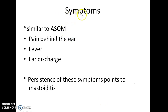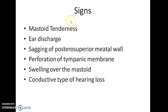The symptoms of acute mastoiditis are similar to acute suppurative otitis media: there will be pain behind the ear, fever, and ear discharge. Persistence of these symptoms points to mastoiditis. The signs seen include mastoid tenderness, ear discharge, sagging of the postero-superior meatal wall, perforation of the tympanic membrane, swelling over the mastoid, and conductive type of hearing loss.